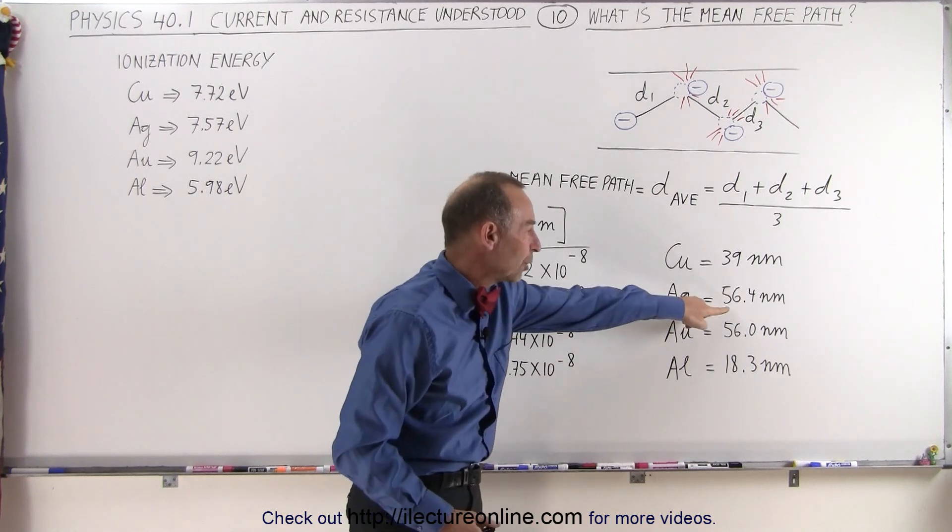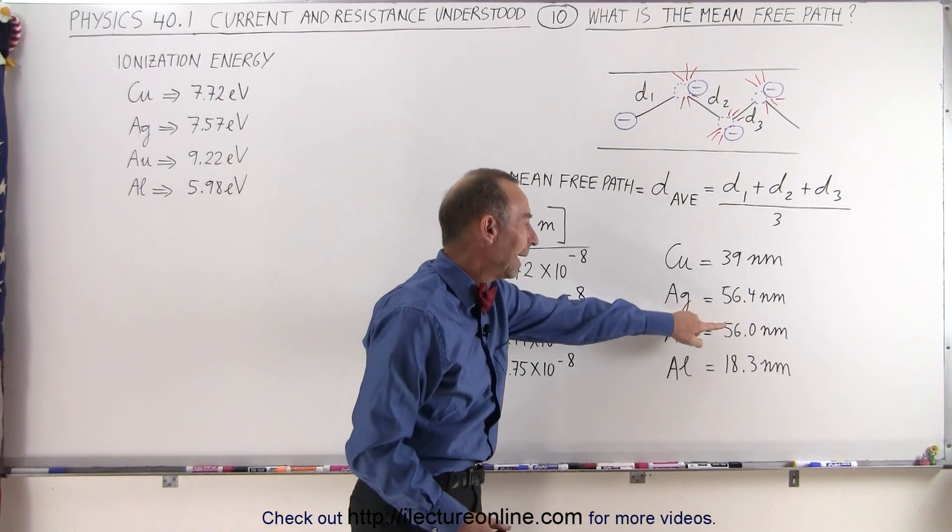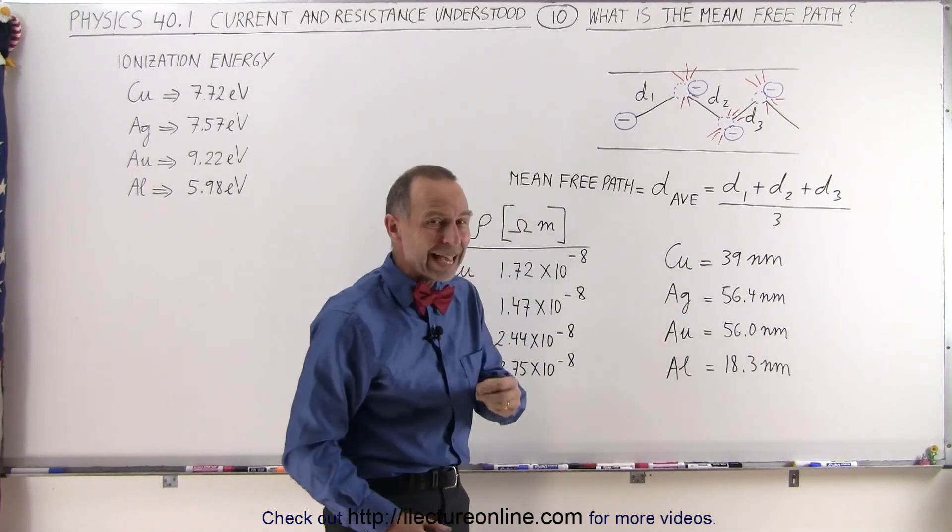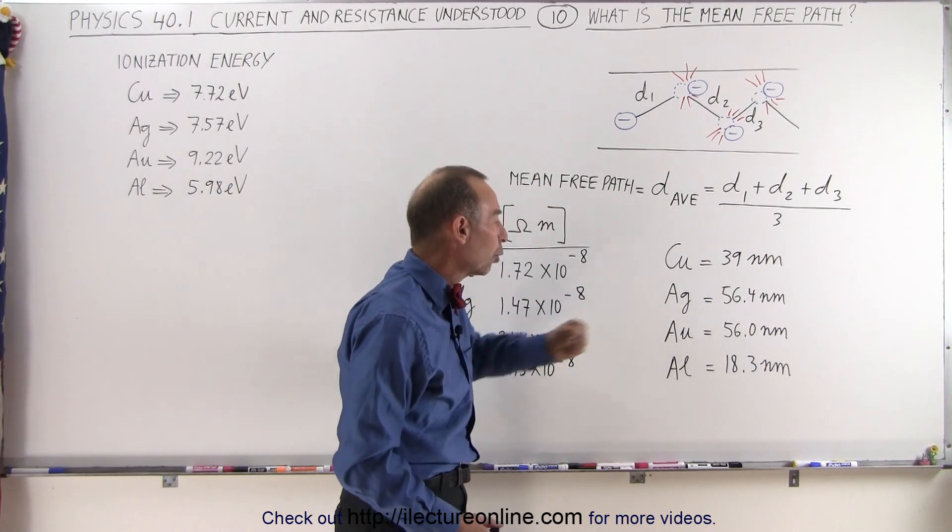Here we have a slightly greater distance for silver than for gold, I should say, and therefore silver is a better conductor, has a higher conductivity and a lower resistivity than gold.